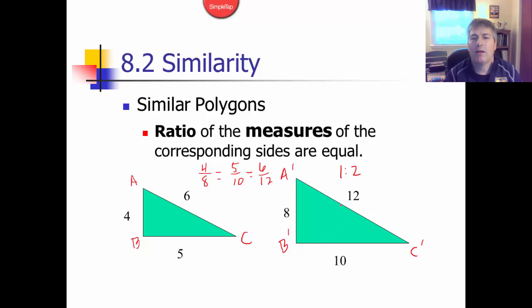This is one of the key aspects of similar polygons: the ratio of the measures of the corresponding sides are equal. The ratio here is 1 to 2.